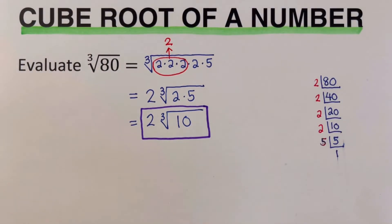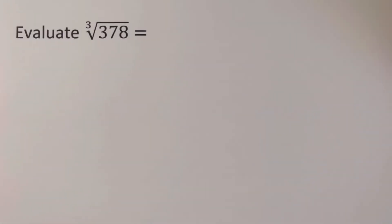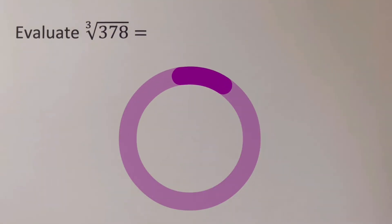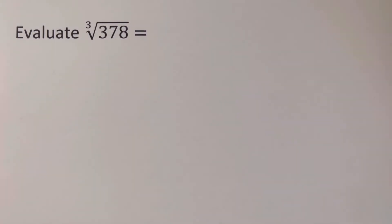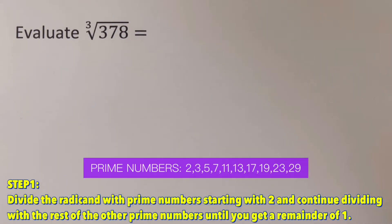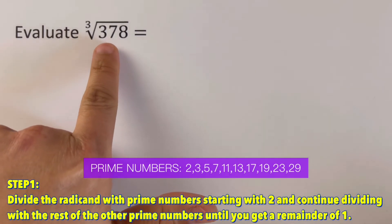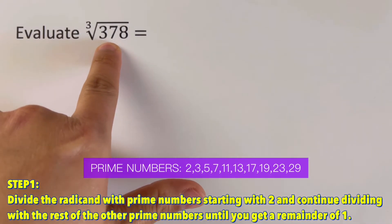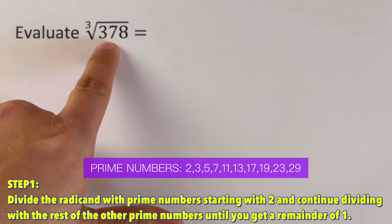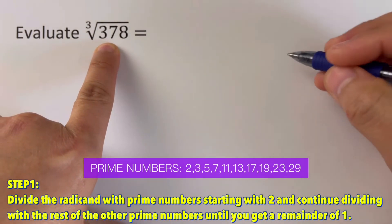Now let's move on to the next example. I would encourage you to pause this video and try this problem out on your own, and when you're done, unpause it and check your answer. So we go over the problem here. The first step is to divide the radicand with a prime number starting with 2 and continue dividing with the rest of the other numbers until you get a remainder of 1. We will divide this by 2, and if 2 doesn't work, then we divide by 3, 5, and so on.